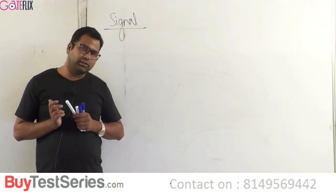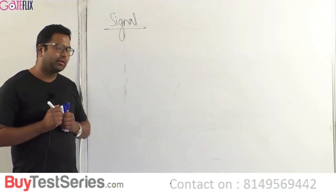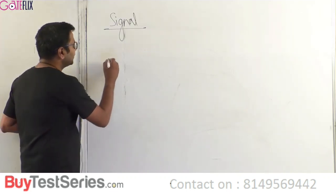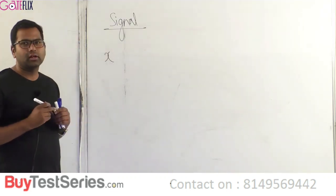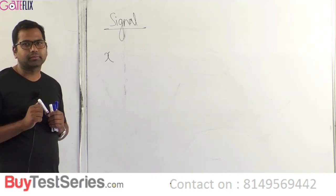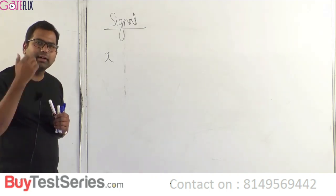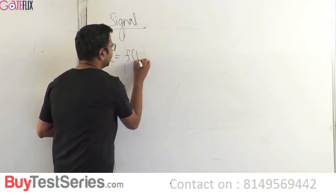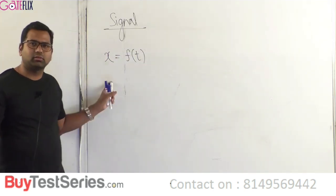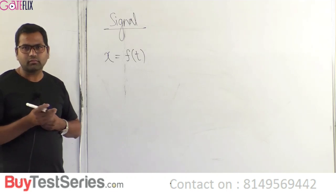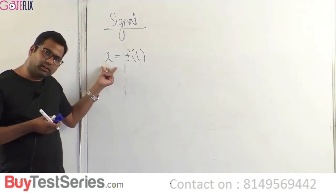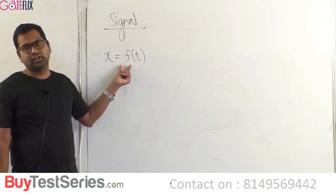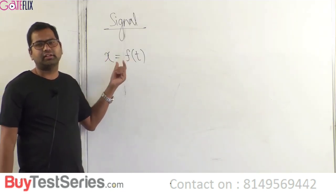There is another aspect to the definition of signal: the signal x depends on time t and is related to time t. The relation with time t is denoted by x = f(t), where x is called the signal, t is called time, and f is the relation between signal x and time t.